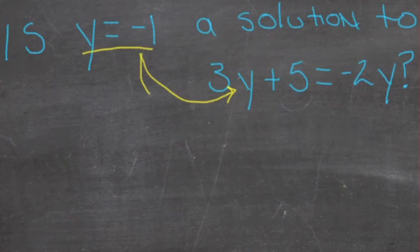So we need to just take that negative 1, put it in place of y everywhere we see it in the equation, and see if it works out to be a true statement.